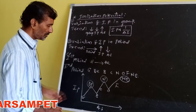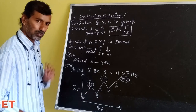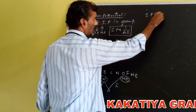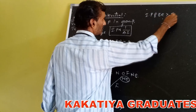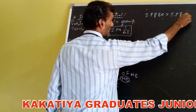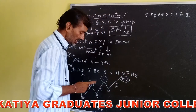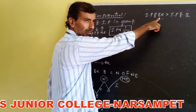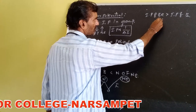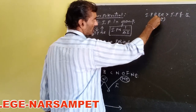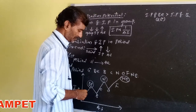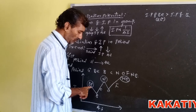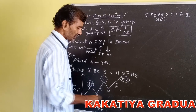First exception: IP of beryllium is greater than IP of boron. Reason: beryllium has the electron configuration 1s², 2s² — a completely filled s² orbital. Hence, ionization potential is much higher compared to boron.